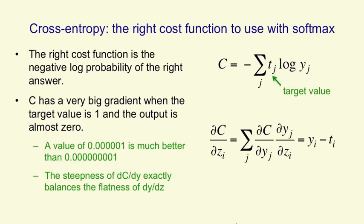And when you multiply the two together to get the derivative of the cross entropy with respect to the logit going into output unit i, you use the chain rule.